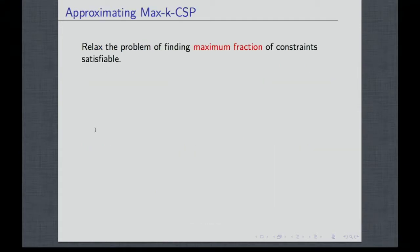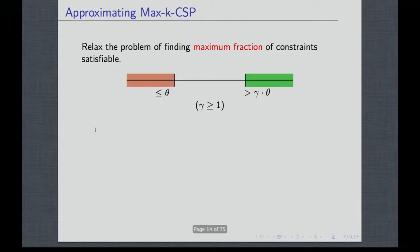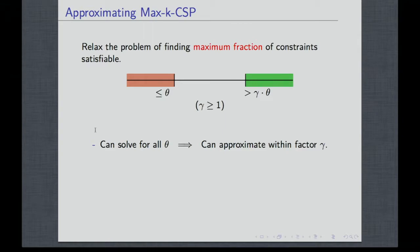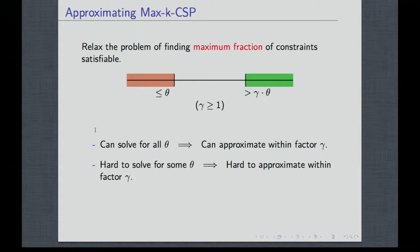We'll be studying the question of finding the maximum fraction of satisfiable constraints and the notion of approximating them. You approximate within a factor gamma if you can decide whether the fraction of satisfiable constraints by an assignment is more than gamma times theta or less than theta. If you can solve this problem for all theta, then you have a gamma approximation algorithm. And if there's some theta for which you cannot solve it, then that's a gamma inapproximability result.